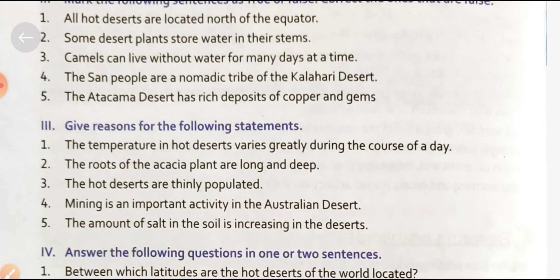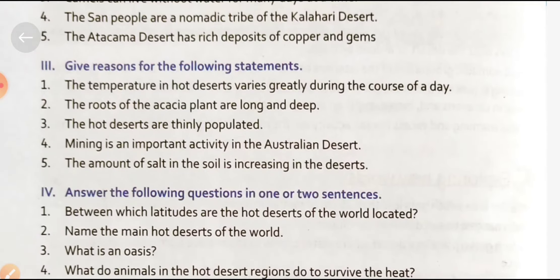Next statement: 'Mining is an important activity in the Australian desert.' The reason is that various types of minerals like iron, copper, borax, and others are found in the Australian desert, making mining an important activity in this region.